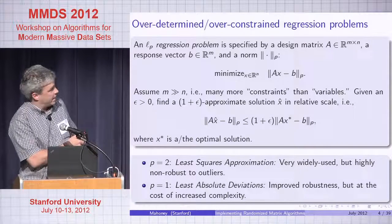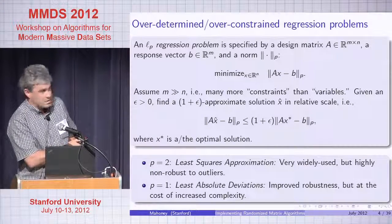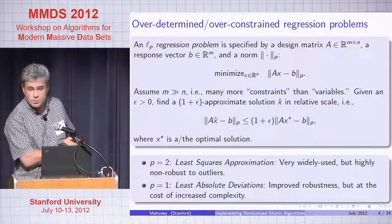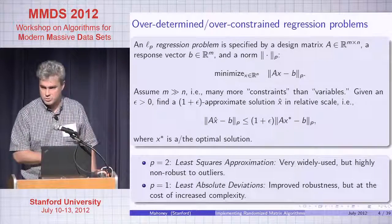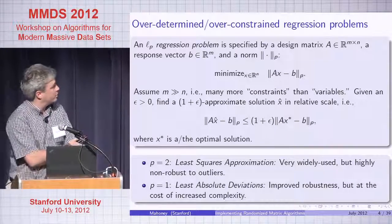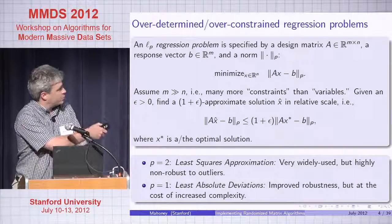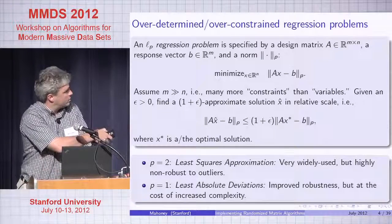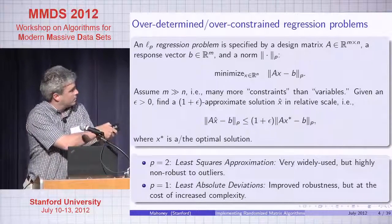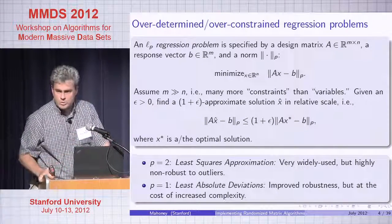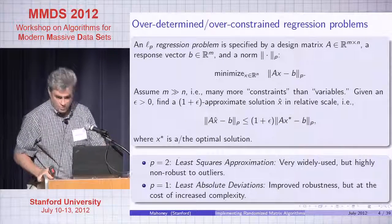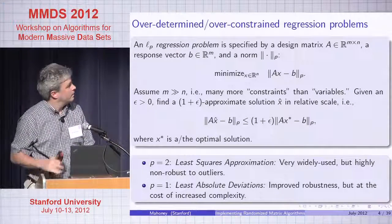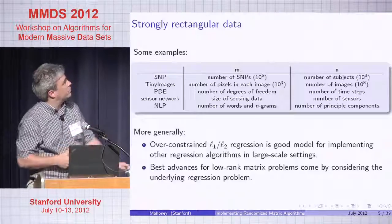In particular, p equals 2 is the least squares approximation problem. P equals 1 is the least absolute deviations problem — a very natural thing, but used much less because it involves solving a linear program rather than a vector space computation like QR or SVD. These will be the two special cases we're interested in.